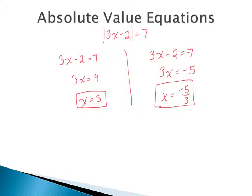So these would be your two solutions to the absolute value equation. You can go back in and check to see that even though the inside might be negative, when we take the absolute value we're talking about distance, so we'll end up getting a positive. Our solution set here would be 3 and negative 5 thirds.